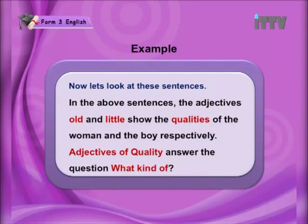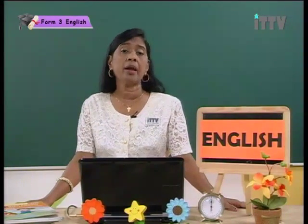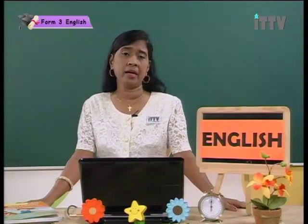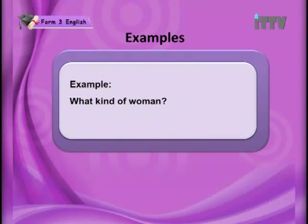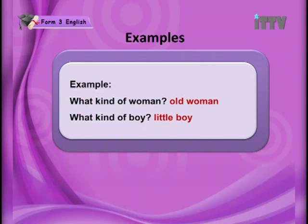Old and little are adjectives — adjectives of quality. They answer the question 'what kind of?' What kind of woman walked slowly? An old woman. What kind of boy donated the money? A little boy. Old is the adjective, woman is the noun. Old tells you more about the noun. Little tells you more about the boy and gives you a clearer picture.